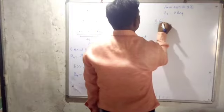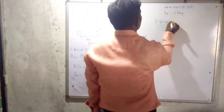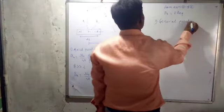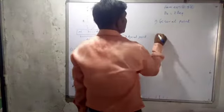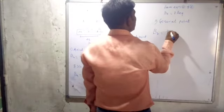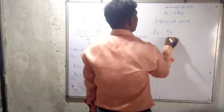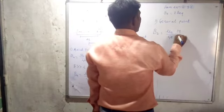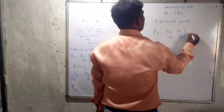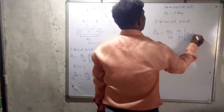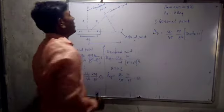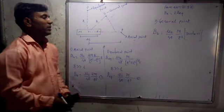Third is the general point. In magnetic induction, B general equals mu0 upon 4pi times M upon r cubed, multiplied by the square root of (3 cos squared theta plus 1). This is the magnetic field at a general point.